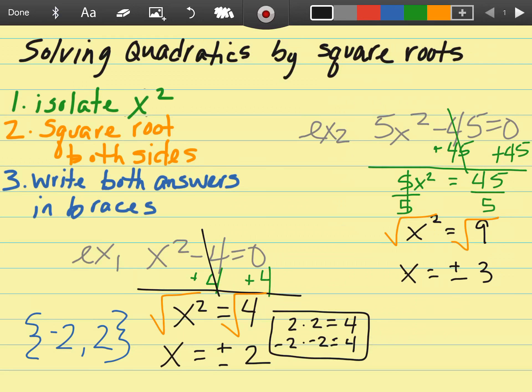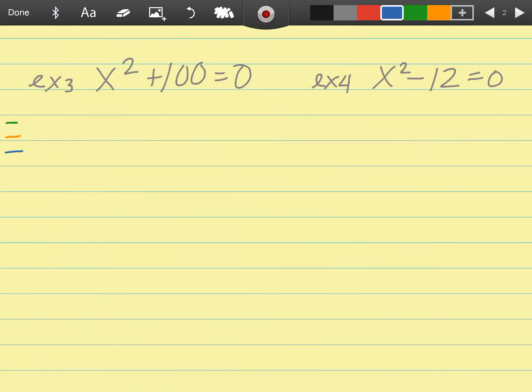The square root of 9 is 3, bring down your plus and minus, and then I have an x by itself. My last step is to write my final answer in my braces. And that's it, let's go look at a few more examples.